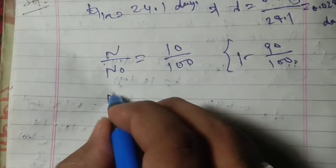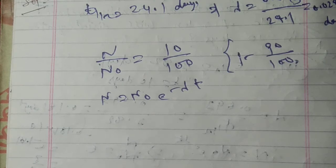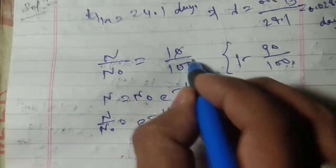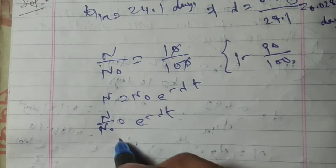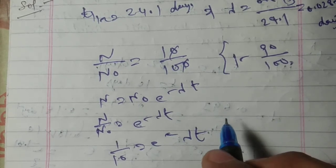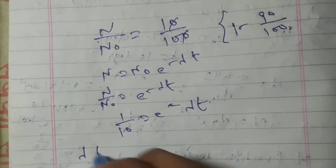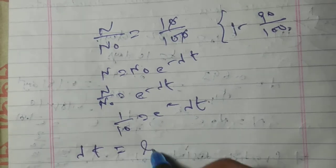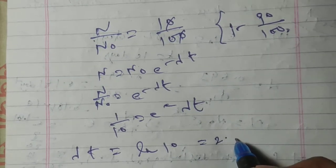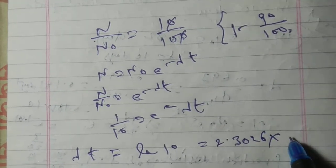From the decay equation N equal to N naught e to the power minus lambda t, so N upon N naught equal to e to the power minus lambda t. This is 1 upon 10, so 1 by 10 equal to e to the power minus lambda t. Taking log both sides we get lambda t equal to ln 10.